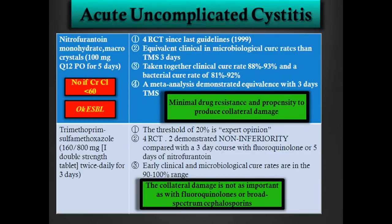The last guideline from 1999 had four randomized controlled trials demonstrating non-inferiority of Bactrim, because most trials now aim to show non-inferiority when comparing with other drugs. It shows Bactrim has non-inferiority compared to a three-day course of quinolones or five days of nitrofurantoin. So it became an A1 recommendation, but we know that here we should not use it. Early clinical and microbiological cure rates are in the 90–100% range.